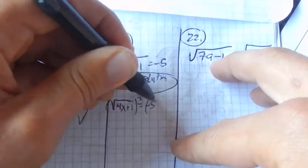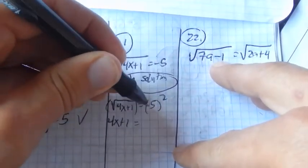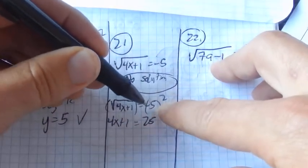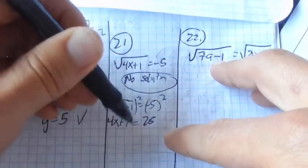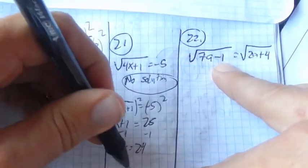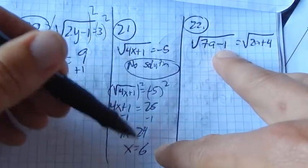So square both sides. Then I get 4x plus 1 equals negative 5 squared is 25. Notice that squaring masks the negative. This is why I get a false answer. Subtract 1. 4x equals 24, x equals 6. So it feels good, but if I plug it back in...